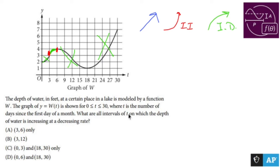So the intervals of t on which the depth of water is increasing at a decreasing rate is A, where it's the interval (3, 6) only, nothing else. Okay, done.